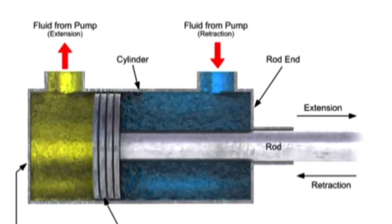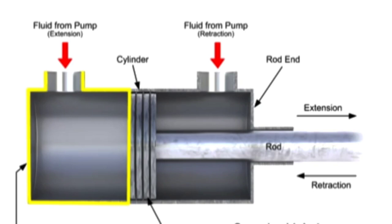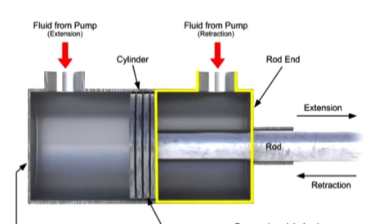The speed at which the piston extends and retracts is calculated using the volumetric flow rate, divided by the area for the incoming fluid. Since each side of the cylinder has a different working area, each side experiences a different speed.